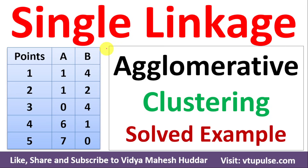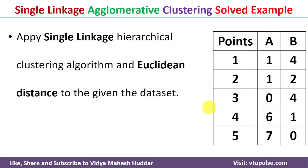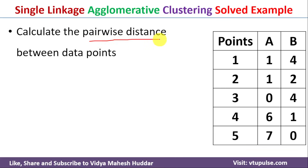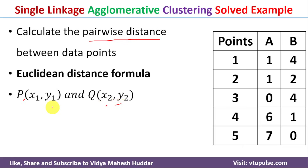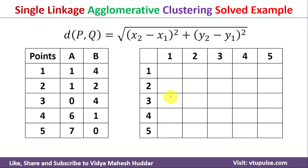Welcome back. In this video I will explain the concept of single linkage agglomerative clustering algorithm with a simple solved example. We need to apply single linkage hierarchical clustering algorithm and Euclidean distance to the given dataset to draw the dendrogram. We will calculate the pairwise distance between the data points using the Euclidean distance formula, considering data points P with values (x1, y1) and Q with values (x2, y2). The Euclidean distance between P and Q equals the square root of (x2 - x1)² + (y2 - y1)².